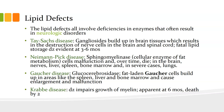Then we have Gaucher disease. It's a malfunction of glucocerebrosidase. You get fat-laden Gaucher cells that build up in areas like the spleen, liver, and bone marrow, and it causes enlargement and malfunction of those organs.